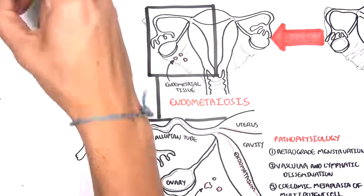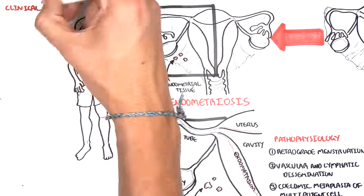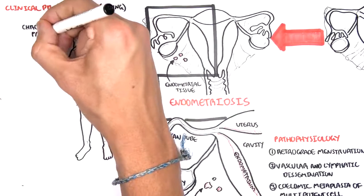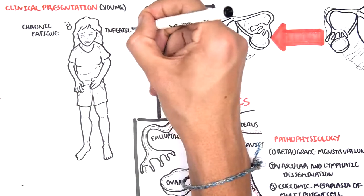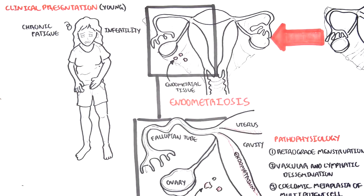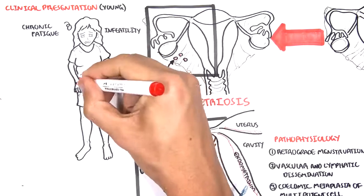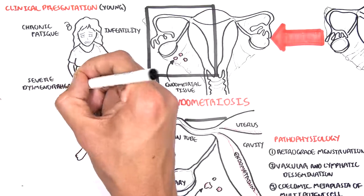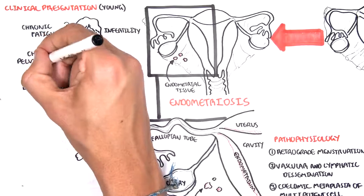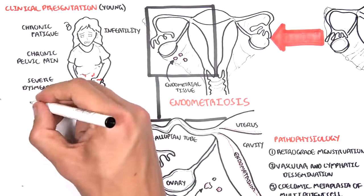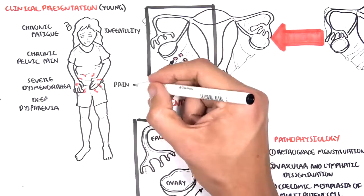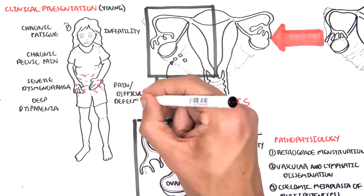Let's talk about the clinical presentation. Usually endometriosis presents in younger women, between 20 and 30, or 30 and 40. Symptoms are bad, heavy periods. They can present with chronic fatigue. Infertility is a common presentation — not being able to conceive. Chronic pelvic pain is very common. Severe dysmenorrhea, which is painful menstruation. They can also have deep dyspareunia, which is deep pain during sexual intercourse, and also symptoms of pain during defecation.